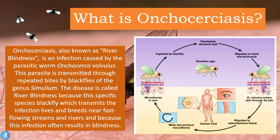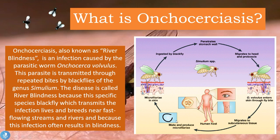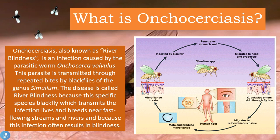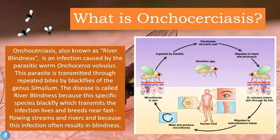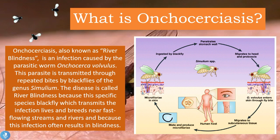The parasite enters the skin through the fly bite, migrates into the subcutaneous tissues, and in the human host it is able to mate and produce microfilaria, which actually deposit themselves in the skin. When the individual is bitten again by the Simulium species of black fly, the microfilaria get ingested, penetrate the stomach wall, and migrate to the head and proboscis where the parasite can enter the skin again through another bite. This is basically how the cycle continues.